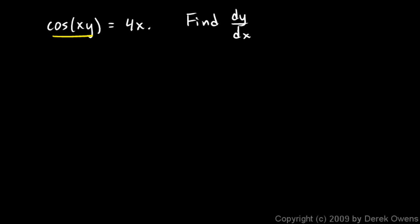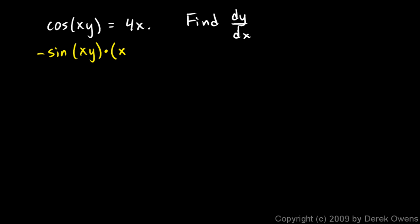Let's take the derivative of the left side with respect to x and the derivative of the right side with respect to x. The derivative of the left side involves the chain rule because we have an outer function and an inner function, and the inner function is a product. First, the derivative of the outer function: that's going to be negative sine of xy. Then times the derivative of the inner function — so we need the derivative of that product: the first times the derivative of the second plus the second times the derivative of the first. The derivative of x is 1, and differentiating y with respect to x gives y prime.